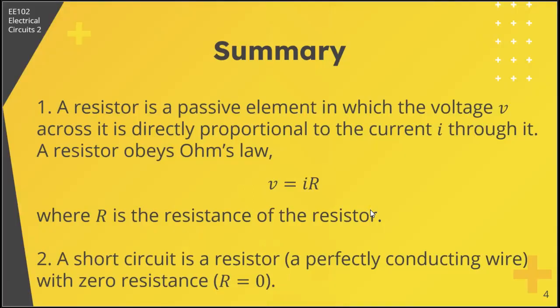First is that a resistor is a passive element in which the voltage across it is directly proportional to the current through it. A resistor obeys Ohm's law, that is V equals IR, where R is the resistance of your resistor. Second, a short circuit is a resistor that is a perfectly conducting wire, modeled with zero resistance, so R equals zero.